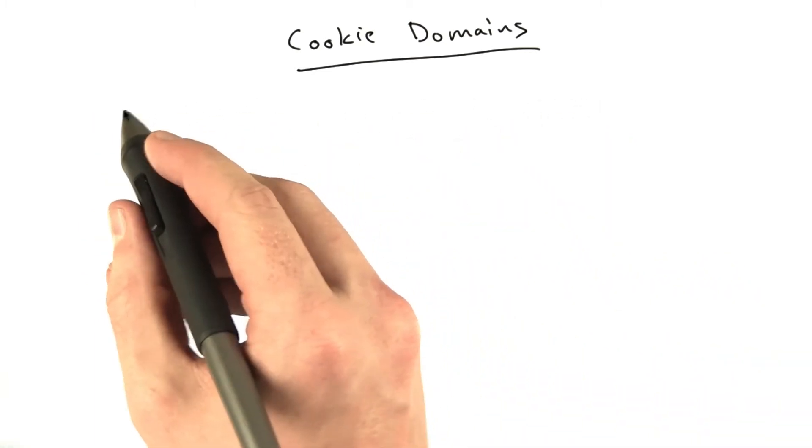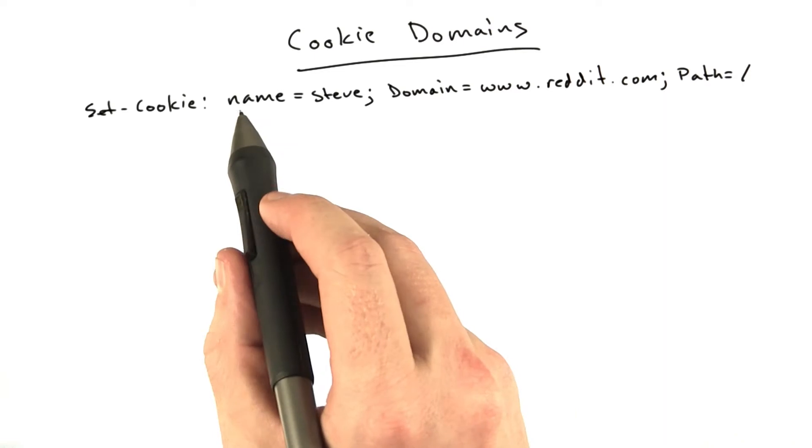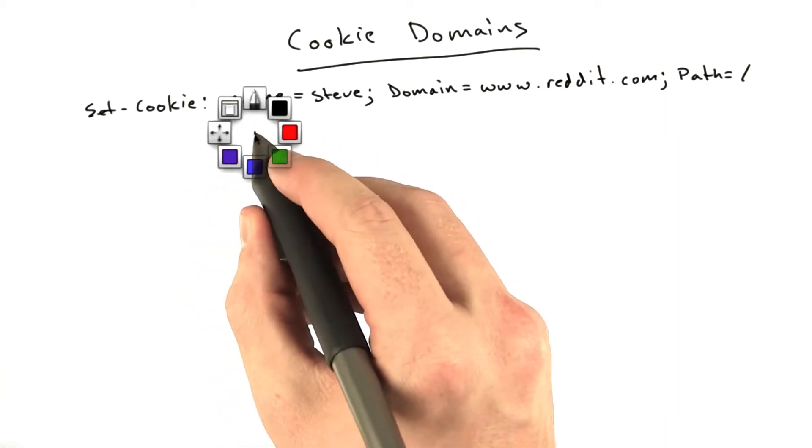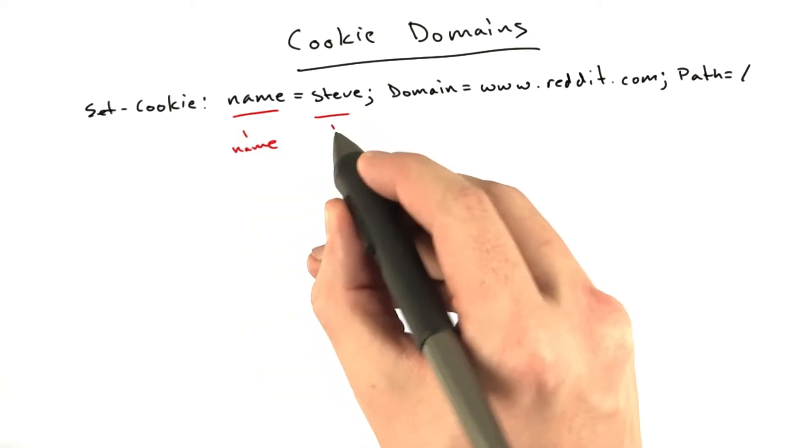Let me draw an example cookie for you. Here's an example set-cookie header for setting this cookie whose name is name, nice and confusing, whose value is Steve.